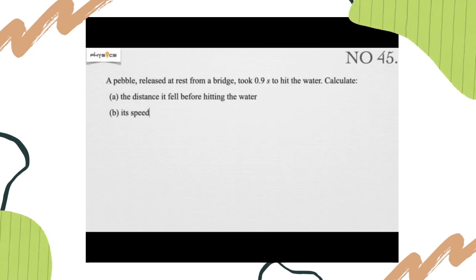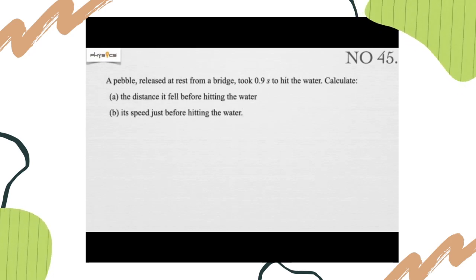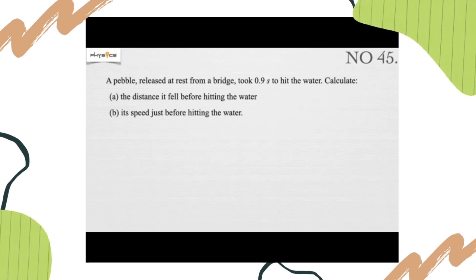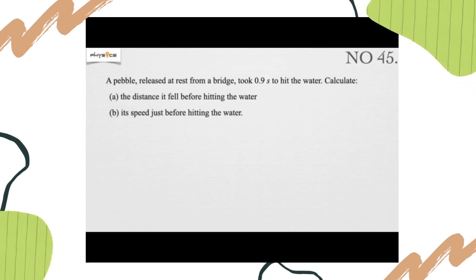Let's move to question number two. This is question number 45 from your VEX question. A pebble released at rest from a bridge took 0.9 seconds to hit the water. Calculate: A, the distance it fell before hitting the water, and B, its speed just before hitting the water.